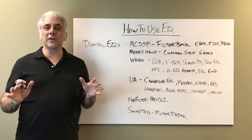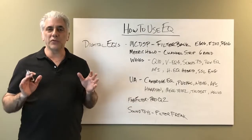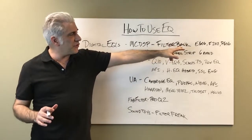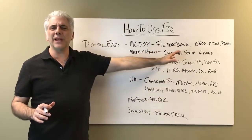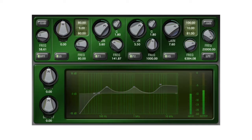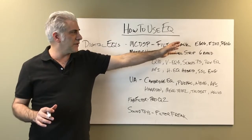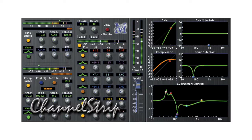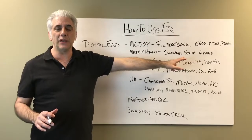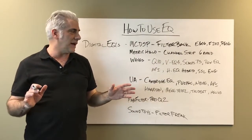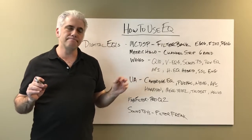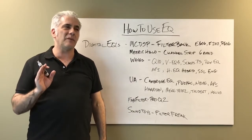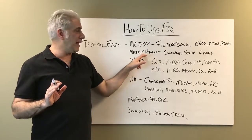Now let's talk about digital EQs I use when tracking and mixing. The McDSP Filter Bank EQs — the E606, F202, and P606 — are great for effects like telephone filtering and general EQ. The Metric Halo channel strip EQ is a six-band parametric with compression, gate, and de-esser. It has one of the tightest Qs available, goes plus and minus 24 dB, and is great for getting out any strange frequency. I've been using that for years — it's basically the first channel strip ever made.